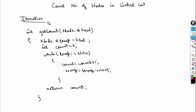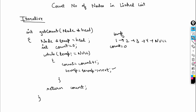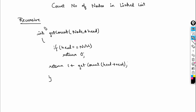Let's look at the code for the iterative solution. We have a temp node pointing to head. While temp is not equal to null, we do count = count + 1 and temp = temp->next. When we come out of the loop, count contains the number of nodes in the list, and we simply return count. I hope the iterative solution is clear.